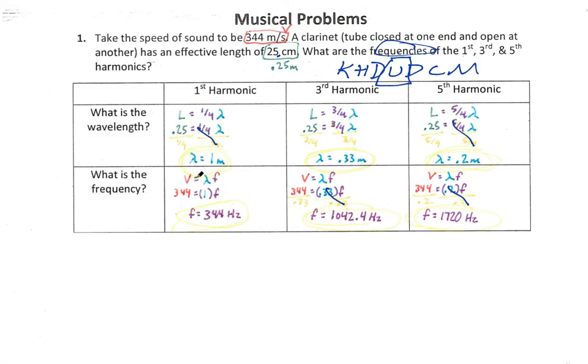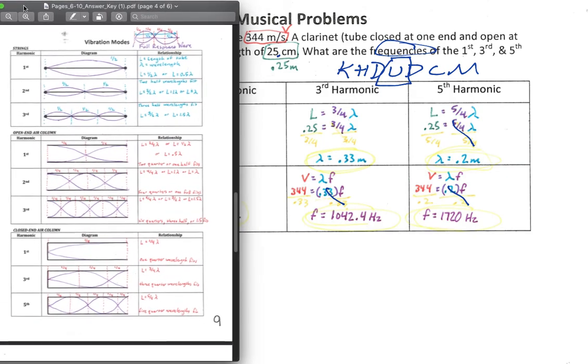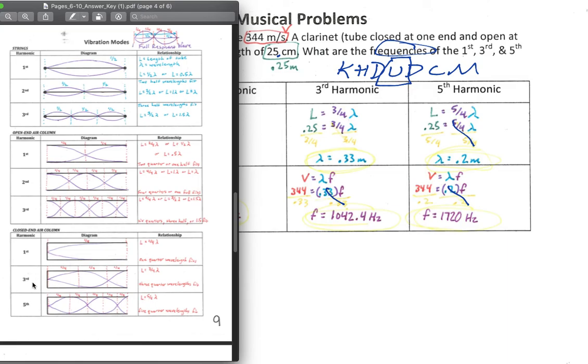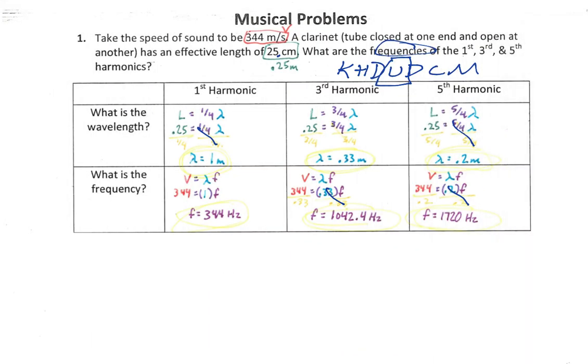So we shouldn't be done quite yet. Yes, we have answered the question, but does this make sense? Does it make sense that if our wavelength is decreasing, going from 1 to 0.33 to 0.2, does it make sense that our frequency would be going up? And hopefully it does, because if we take a look at our chart over here, if I'm going from a first to a third to a fifth order harmonic, my wavelength is getting shorter and shorter each time. If it's getting shorter each time, what that means is I'm able to fit more waves within the tube. If I fit more waves within the tube, that means they must be moving faster. Or another way of saying that would be that we have more cycles within that tube, going from 344 hertz to 1,042 to 1,720 is increasing the amount of cycles that we have per second. And with that, that is our unit.